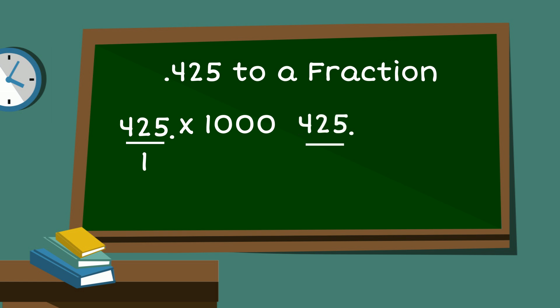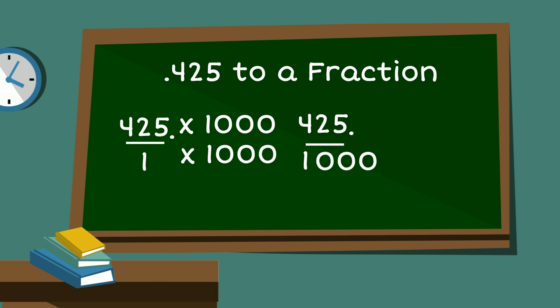When you multiply 1 by 1,000, you get 1,000 — or you could just add three zeros: 1, 2, 3. Now we have 425 over 1,000.